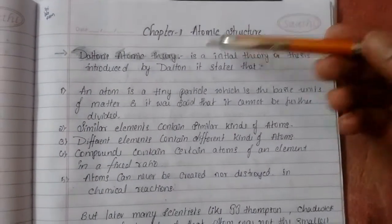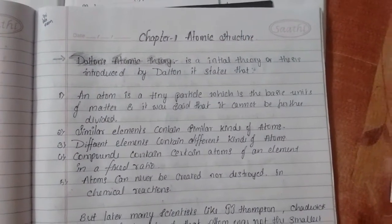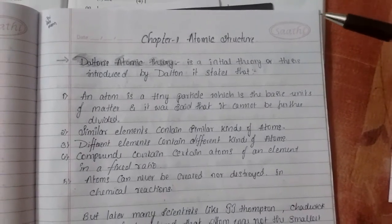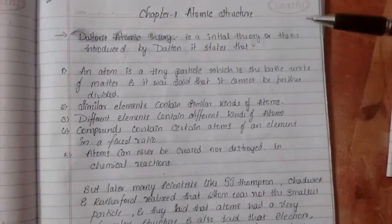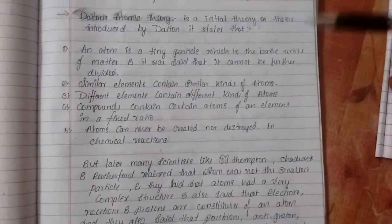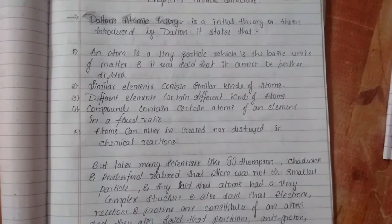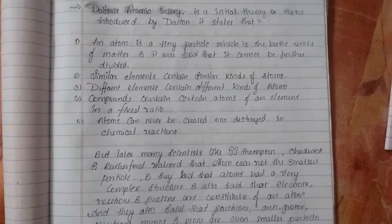And now, we'll learn about Dalton's atomic theory. It's an initial theory on the thesis of atomic structure and it was introduced by Dalton. And it states that an atom is a tiny particle which is the base of units of matter and it was said that it cannot be further divided.